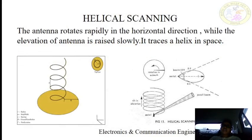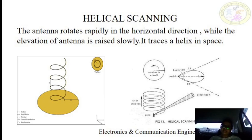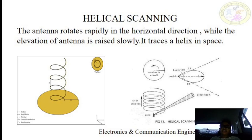In helical scanning, the antenna rotates rapidly in the horizontal direction while the elevation of the antenna is raised slowly, tracing a helix in space. The antenna is returned to its starting point at the completion of the scanning cycle. Helical scanning is used to search the complete hemisphere. The antenna rotates horizontally slowly but moves in the vertical direction fast.